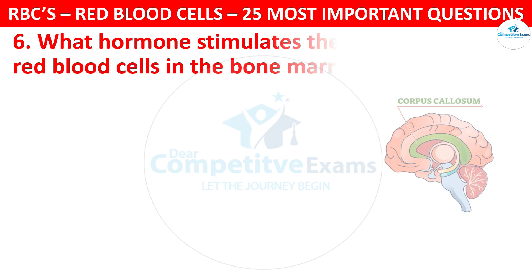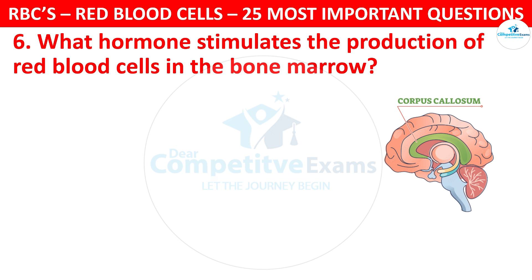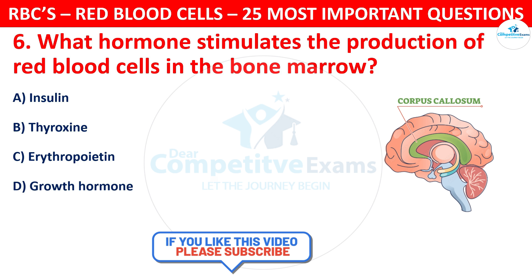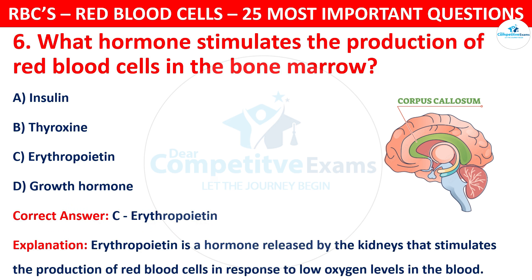Question 6. What hormone stimulates the production of red blood cells in the bone marrow? Your options are: Insulin, Thyroxine, Erythropoietin, or Growth Hormone. The correct answer is C, that is Erythropoietin. Erythropoietin is a hormone released by the kidneys that stimulates the production of red blood cells in response to low oxygen levels in the blood.